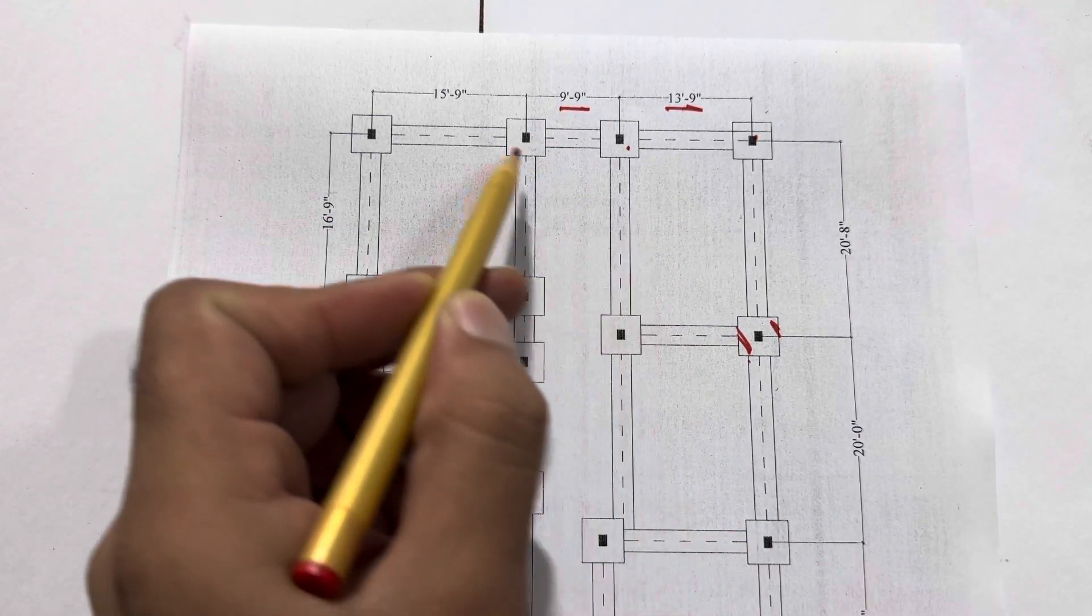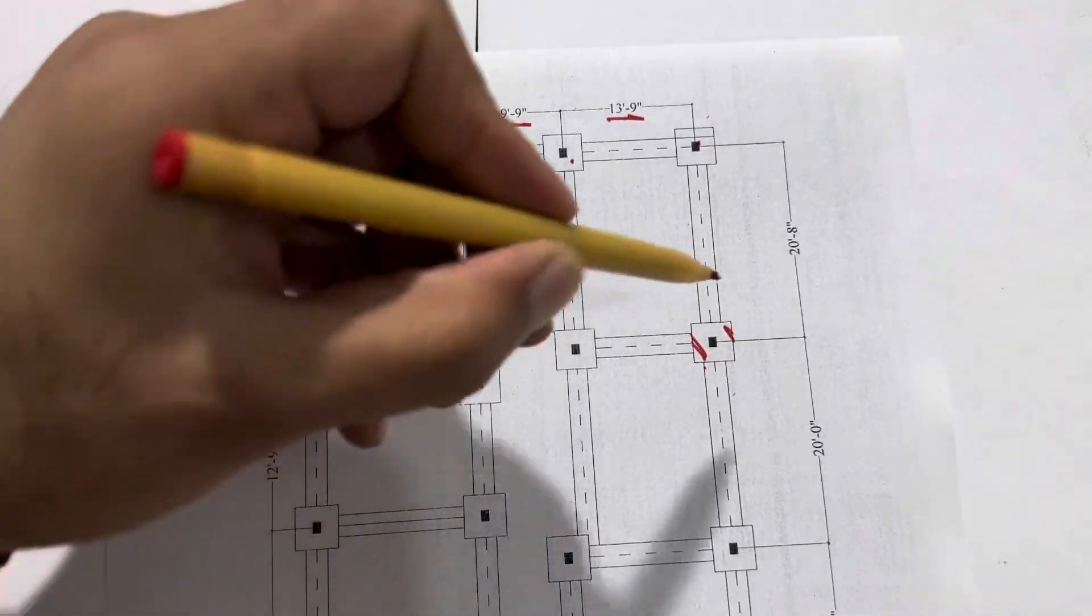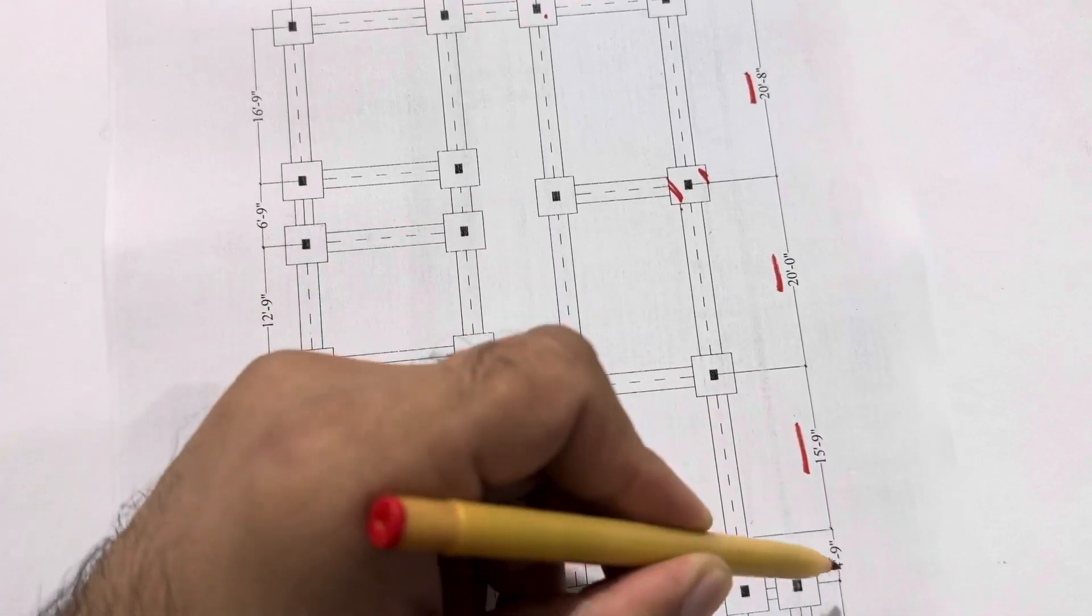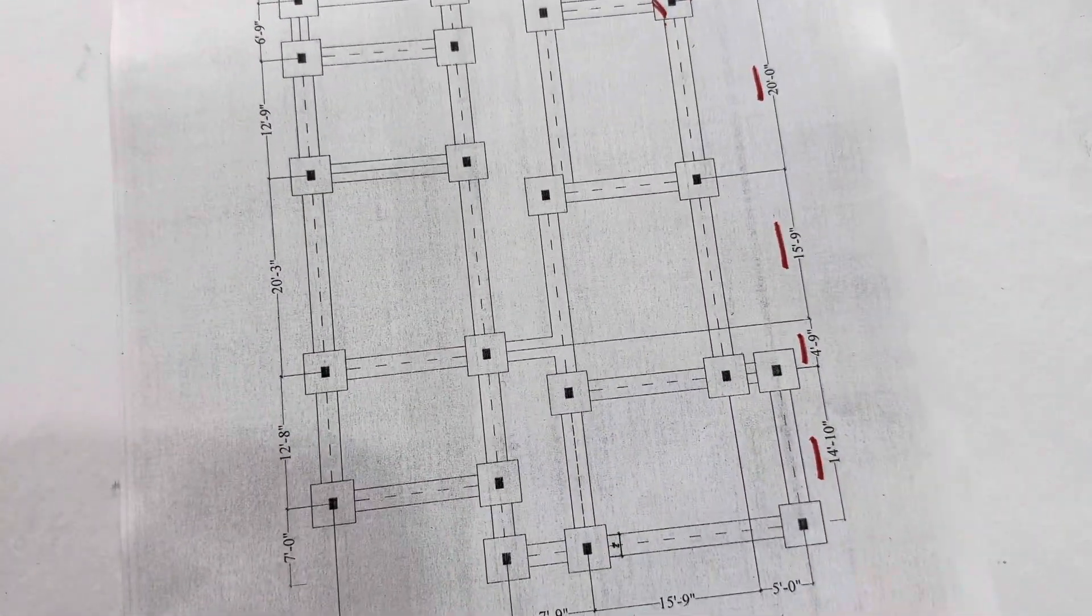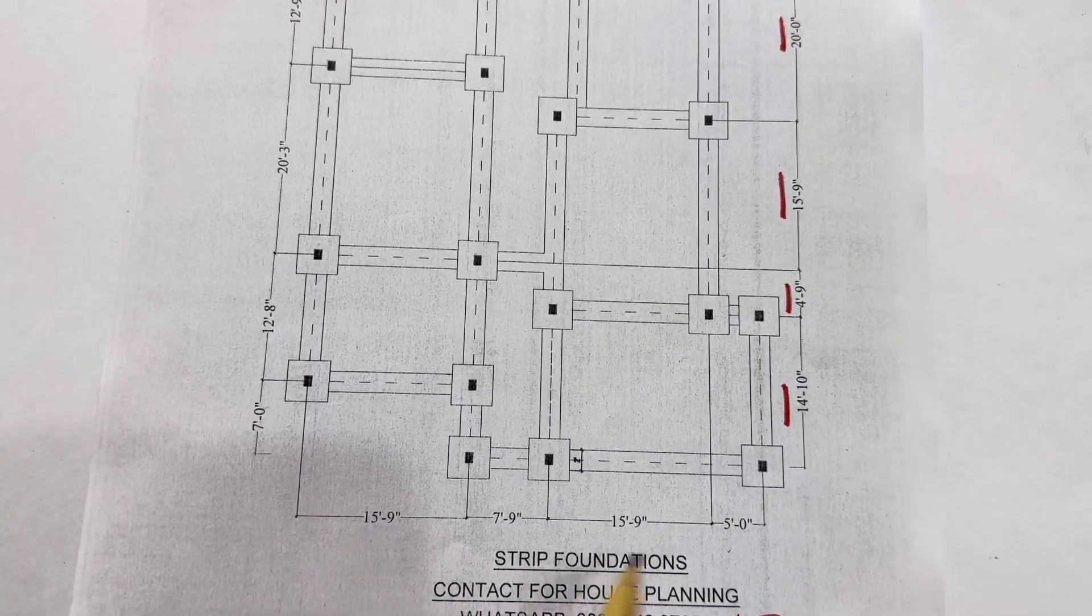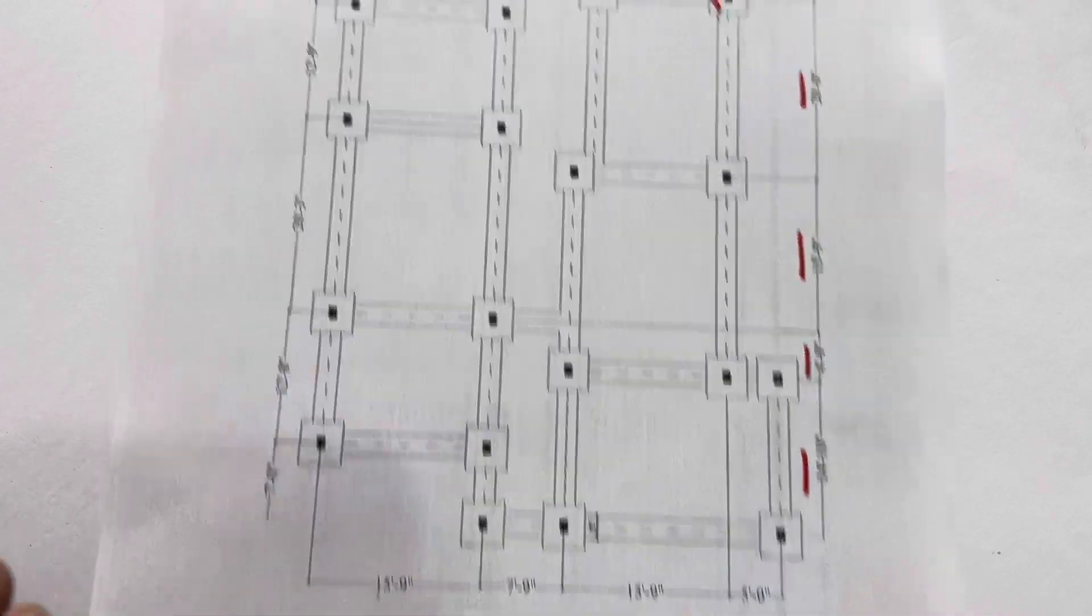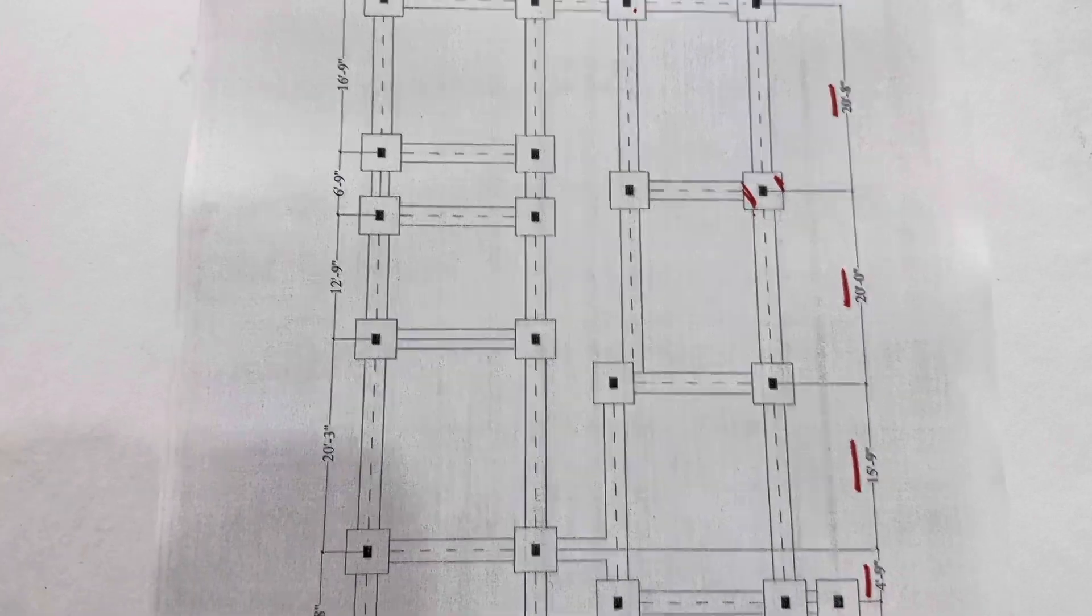From this side, 20 feet 8 inches, 20 feet, 15 feet 9 inches, 4 feet 9 inches, and 14 feet 10 inches. On the other side, 5 feet 5 inches, 15 feet 9 inches, 7 feet 9 inches, 15 feet 9 inches, and this is also the left side.